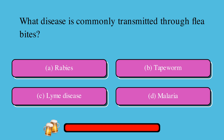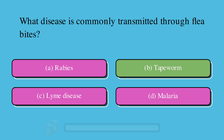What disease is commonly transmitted through flea bites? A. Rabies, B. Tapeworm, C. Lyme disease, or D. Malaria. The correct answer is B. Tapeworm.